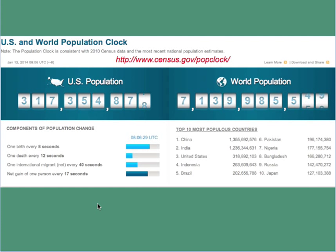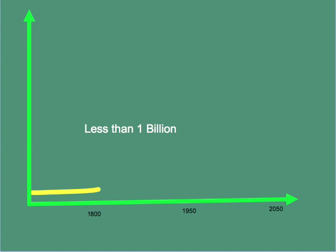By the time you see this, the population of planet Earth would have risen significantly from the 7.139 billion shown here. For almost all of mankind's existence on Earth, the population was well below 1 billion, and only exceeded the 1 billion mark for the first time around the year 1800. It was at this time that the Englishman Thomas Malthus wrote his famous essay on population, predicting that by 1950 the Earth's population would exceed its carrying capacity.